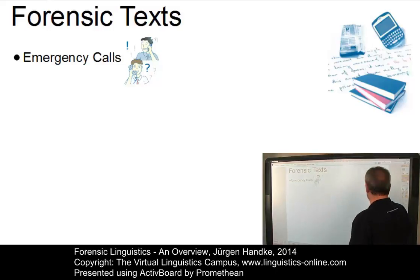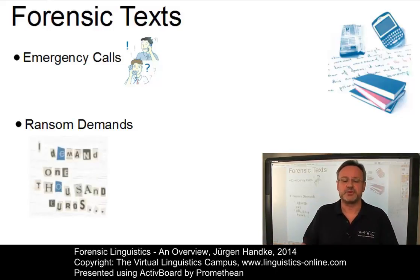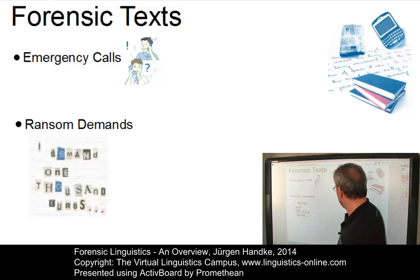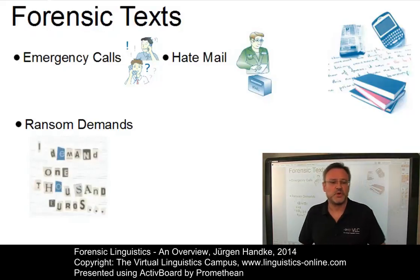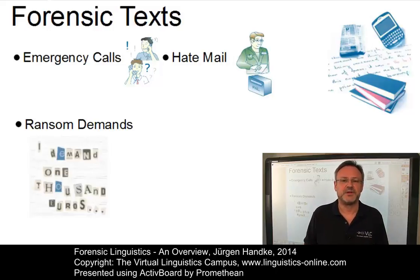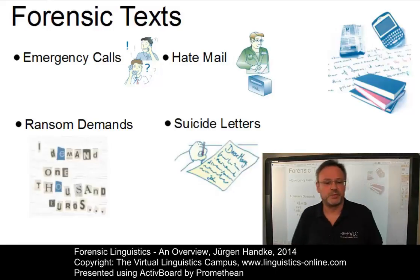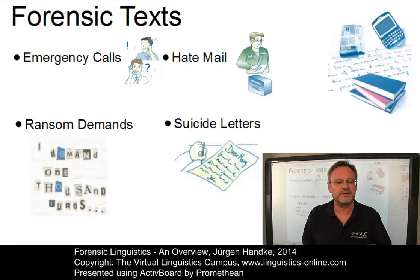Another forensic text type is referred to as ransom demands or threat texts. They can be spoken, written or even videoed, and have in common that the sender of the text or the person making the call is usually anonymous. Or take hate mails, whose goal is to express hatred by appearing to threaten someone; however, there is often no actual threat in reality, and the person making the threat is rarely in a position to carry it out. Finally, there are suicide letters, where a central problem is: did the author really kill himself, or could it be that he is the murderer?